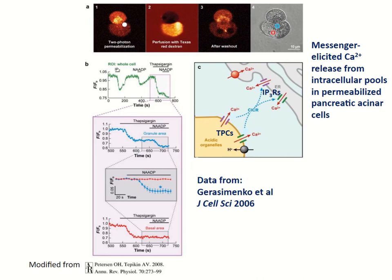We have been studying the release of calcium from intracellular stores in two-photon permeabilized cells. We focus an infrared laser on the plasma membrane and essentially drill a hole in the cell. In this permeabilized system, we can fill up the intracellular stores with a fluorescent calcium probe. We usually use two different regions of interest: the blue region in the granular area, which contains acidic secretory granules, endosomes, lysosomes, and other acidic organelles; and the red region in the basal part of the cell, which is essentially pure endoplasmic reticulum.